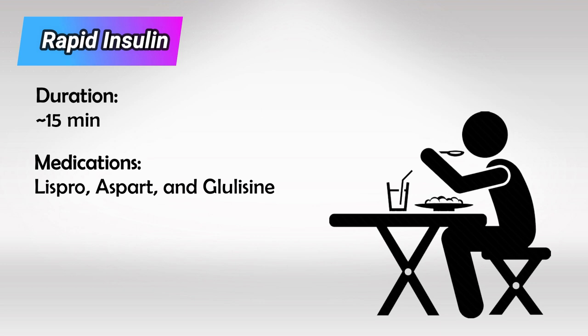These are especially useful in controlling postprandial hyperglycemia. The patient takes the injection before or during the meal, and by the time they finish their meal, the hyperglycemia would reach its peak and the insulin would start working.